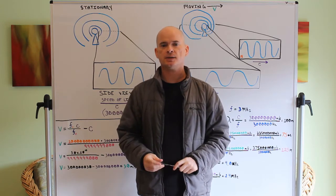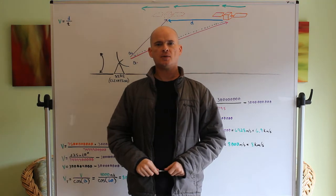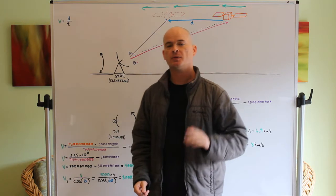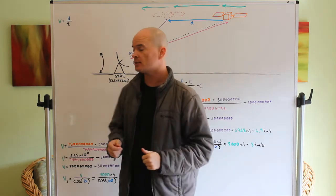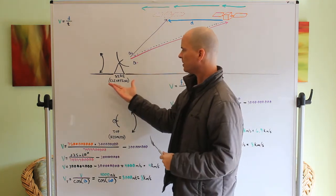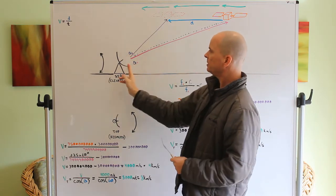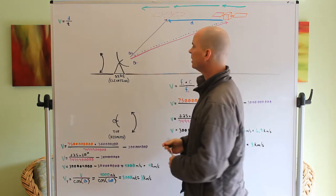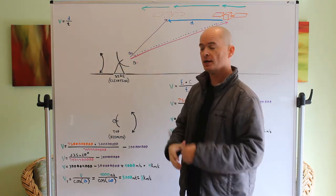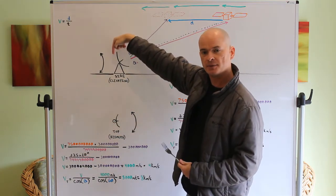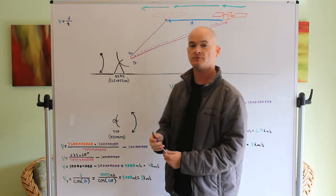Now let's get into something related to satellites and tracking. We have a ground antenna — looking at it from the side, it can move up and down. That range of motion is called the elevation. Looking at it from the top down, it can also rotate, which is called the azimuth. Combining both gives us the position of something in space.